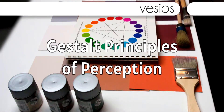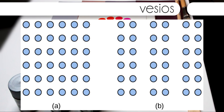Another Gestalt principle for organizing sensory stimuli into meaningful perception is proximity. This principle asserts that things that are close to one another tend to be grouped together, as figure 5.26 illustrates.